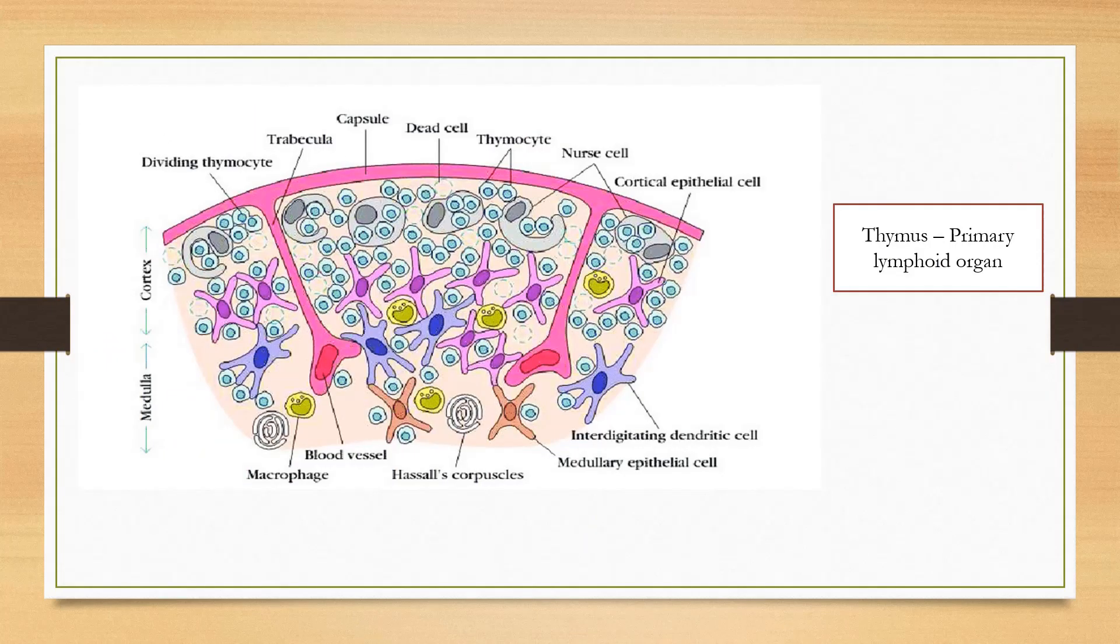Thymus is the primary lymphoid tissue in which T cells get developed and mature. Thymus is situated above the heart. It has two lobes and is surrounded by capsule. The capsule is invaginated to form trabeculae, which divide lobes into lobules.